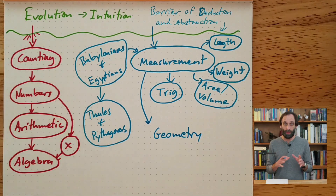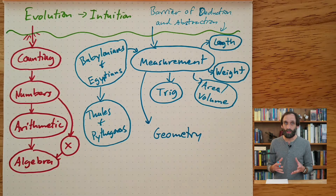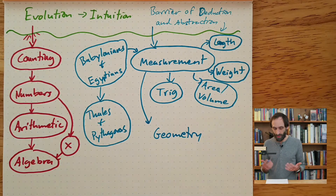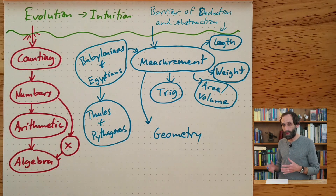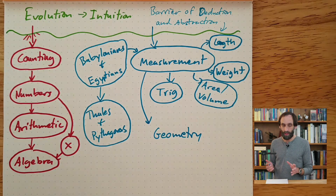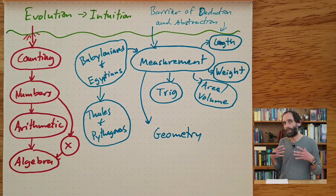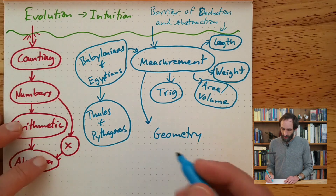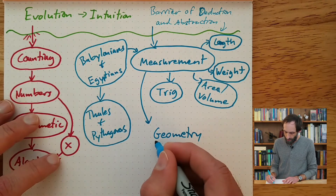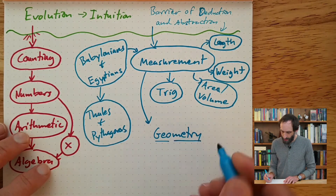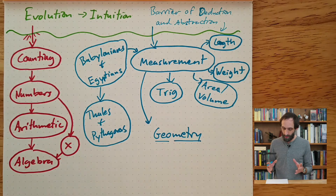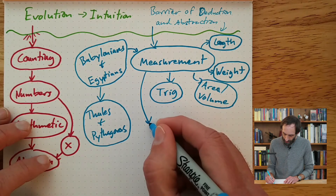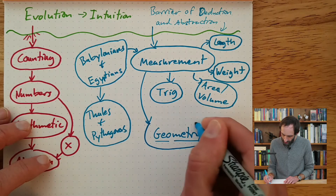When the Greeks gave this discipline a name — geometry — it came from this idea of measuring the earth. 'Geo' means earth and 'metri' means measurement. So geometry really just means earth measurement, going back to the original Greek. That's how the Greeks thought of geometry originally, reflecting where it came from — the Babylonians' and Egyptians' practice of measurement.